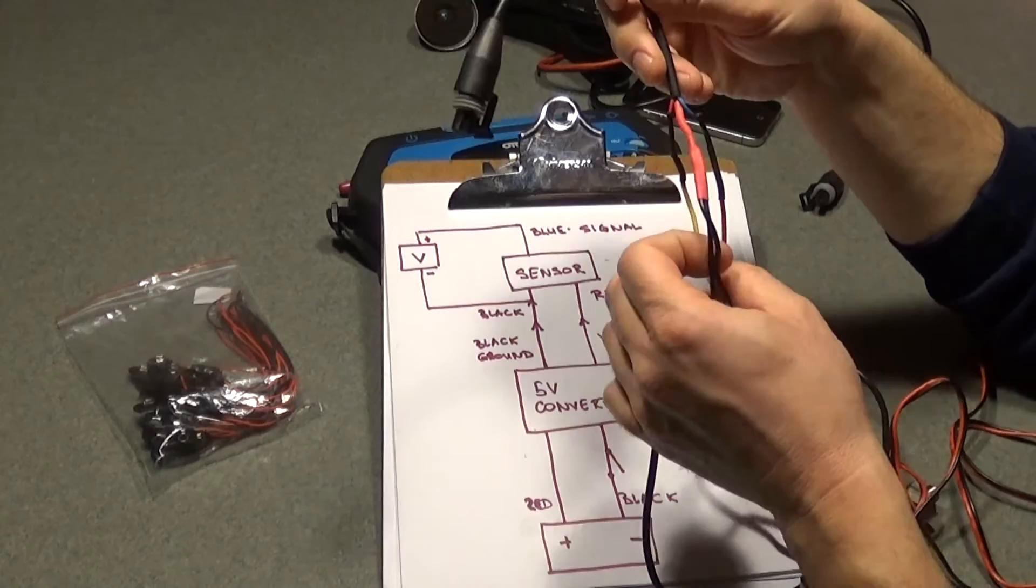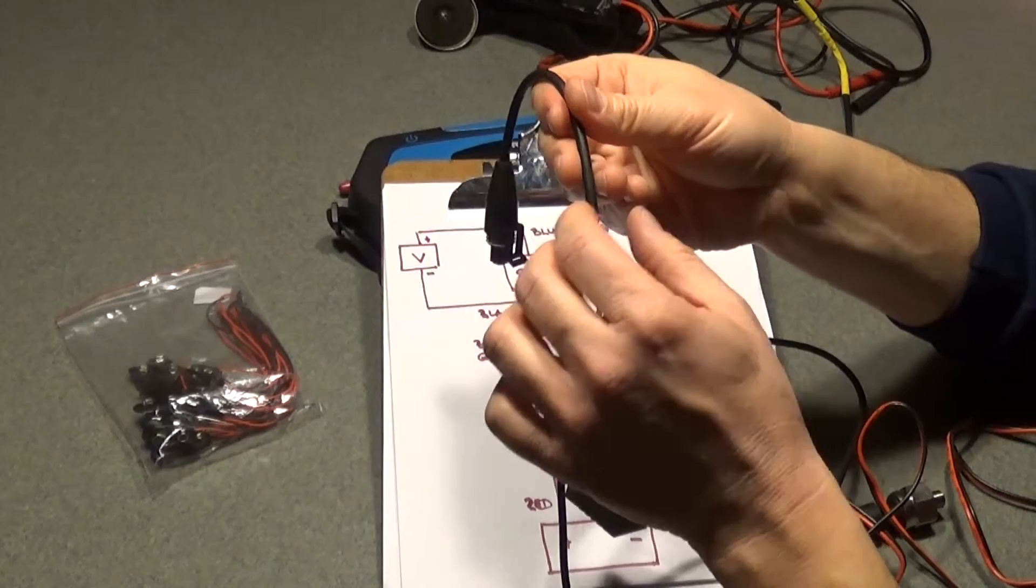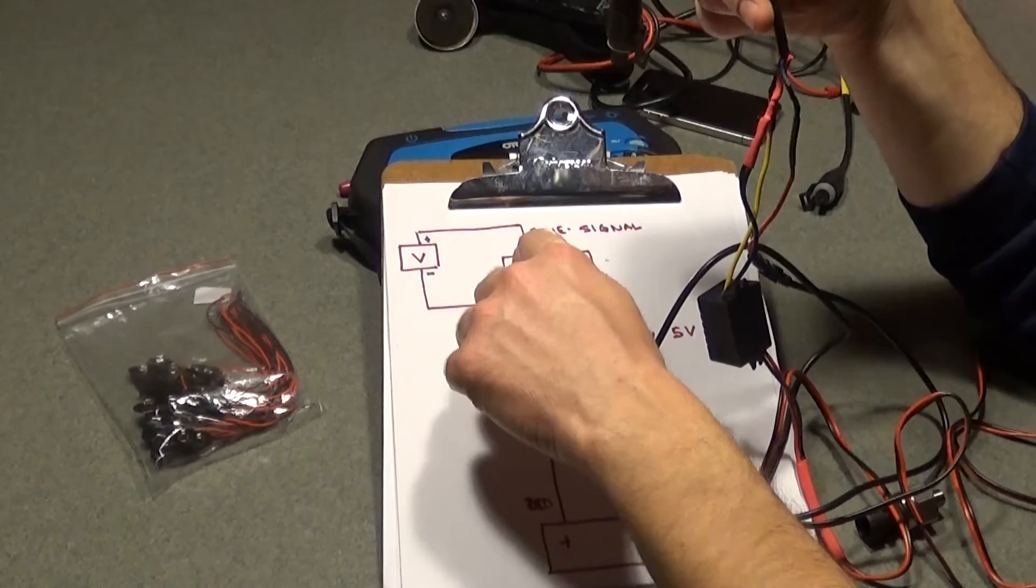Now your ground from your converter, your black wire, is going to be connected to the black wire from your harness. It's kind of hard to see, it sits underneath this shrink tube, okay. So you're going to have black wire coming from your harness, right there.